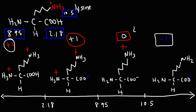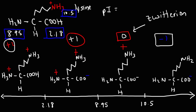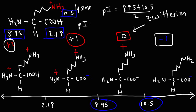The zwitterion is the structure with a net charge of 0 — it has both a positive and a negative charge. To calculate the isoelectric point of the zwitterion, we average the two flanking pKa values: (8.95 + 10.5) / 2 = 19.45 / 2, which gives us an isoelectric point of approximately 9.725, or about 9.7.